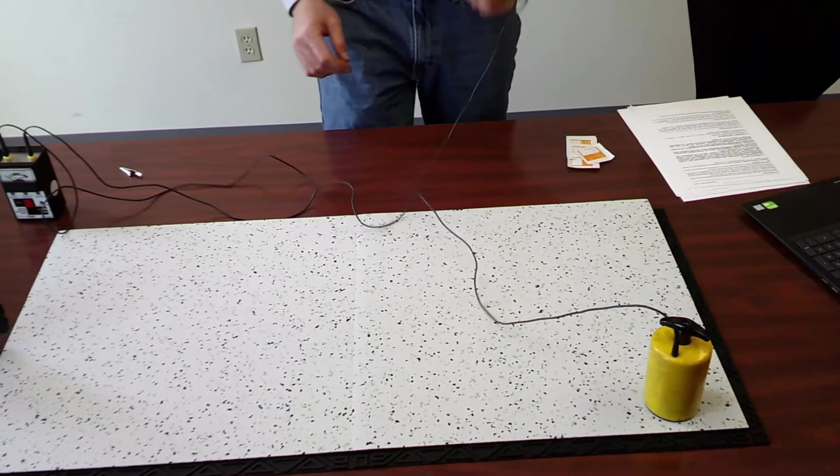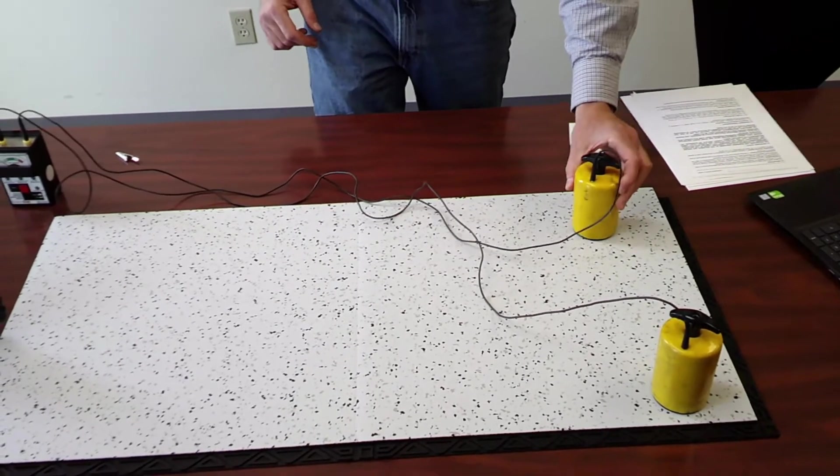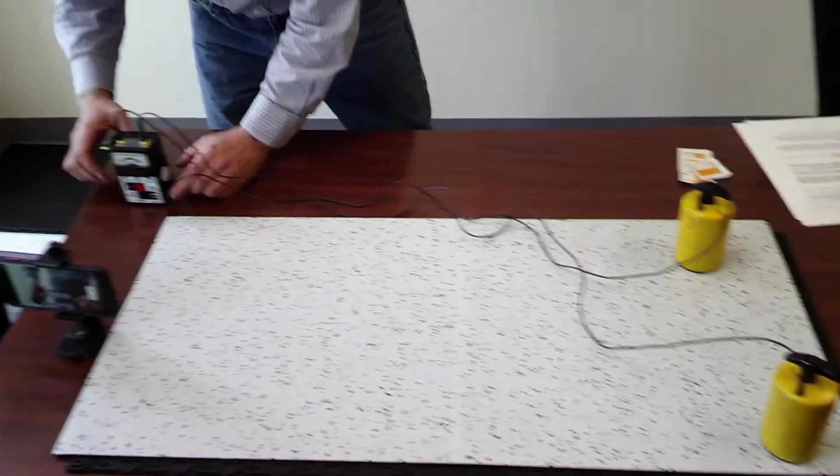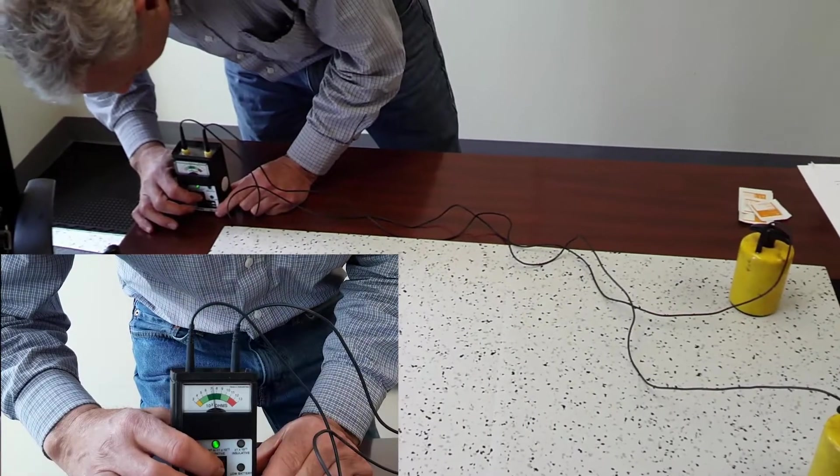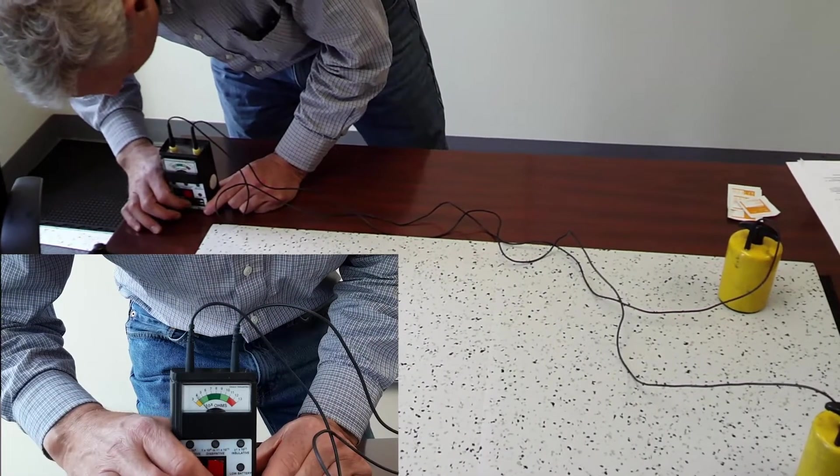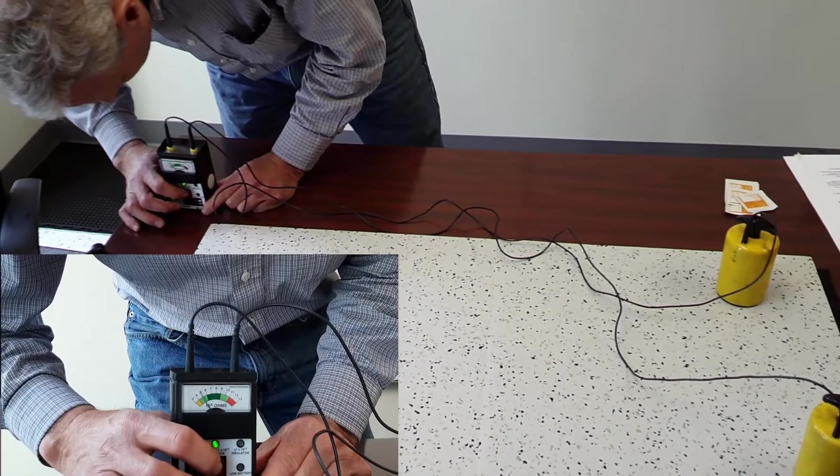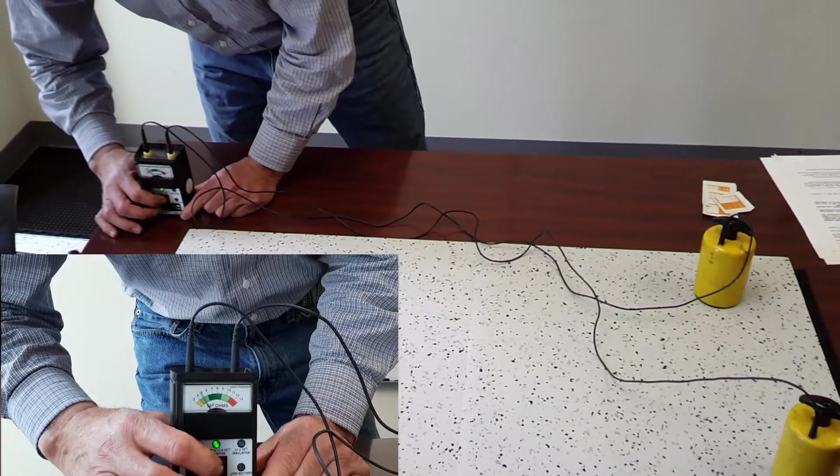Then you'll take your other probe and go through the same six spots. So you start with the bottom left. And now we're getting above 10 to the sixth. We'll switch it over. And you can see when I've switched it, it drops down under 10 to the sixth.